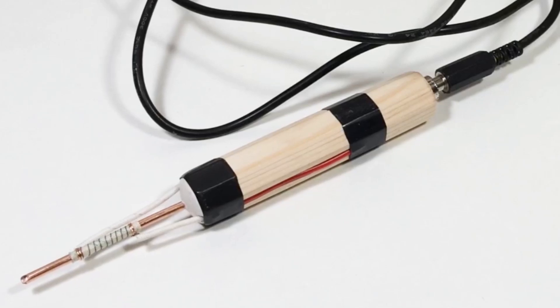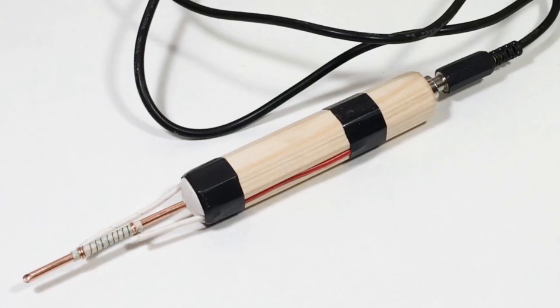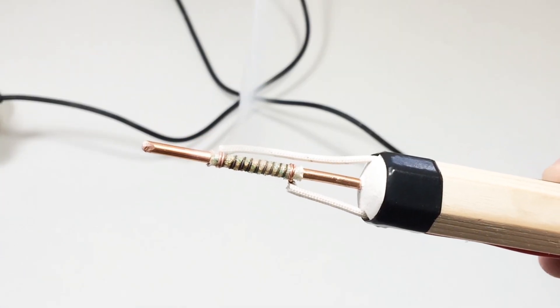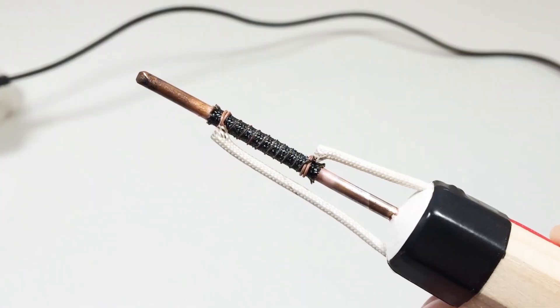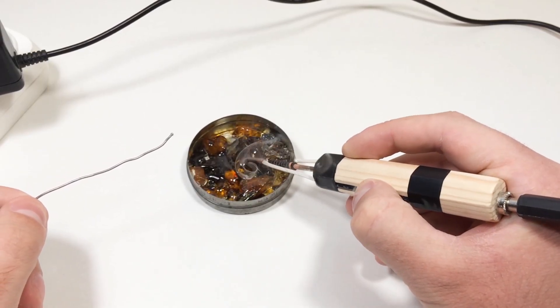The handle is made out of a small wooden block. It's lightweight, easy to hold, and most importantly, it works as a natural heat insulator. Even when the tip is red hot, the handle stays cool and safe in your hand.